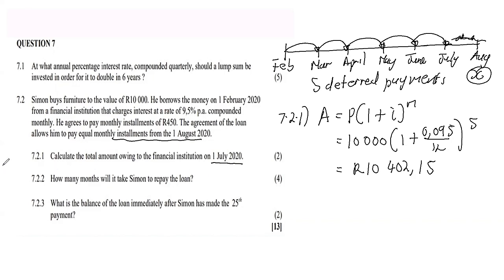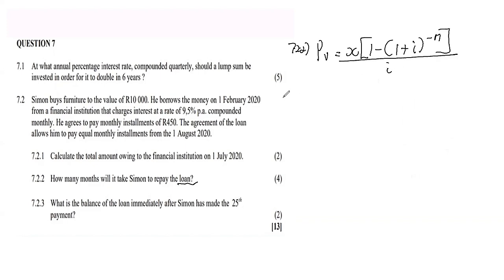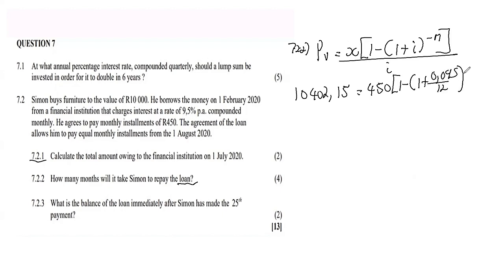Question 7.2.2 asks how many months it will take Simon to repay the loan. Since this is a loan, we use the present value formula — anything involving a loan is solved with the present value formula. The present value from 7.2.1 is R10 402.15. The monthly installment x is R450, and the interest is 0.095 over 12 compounded monthly, raised to the exponent of negative n.